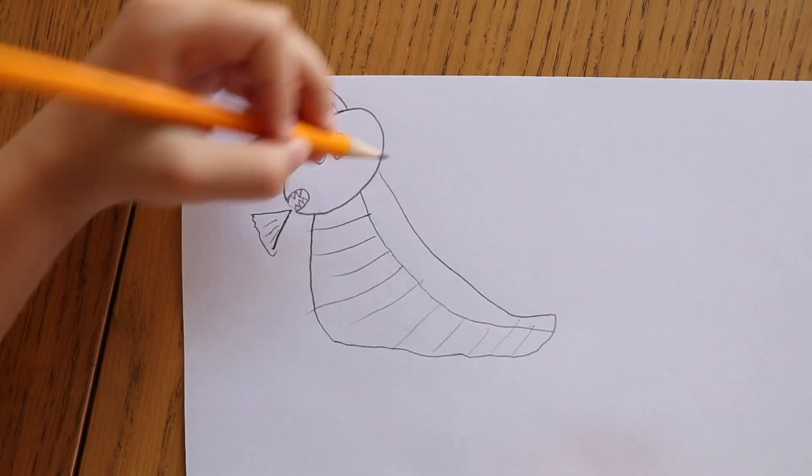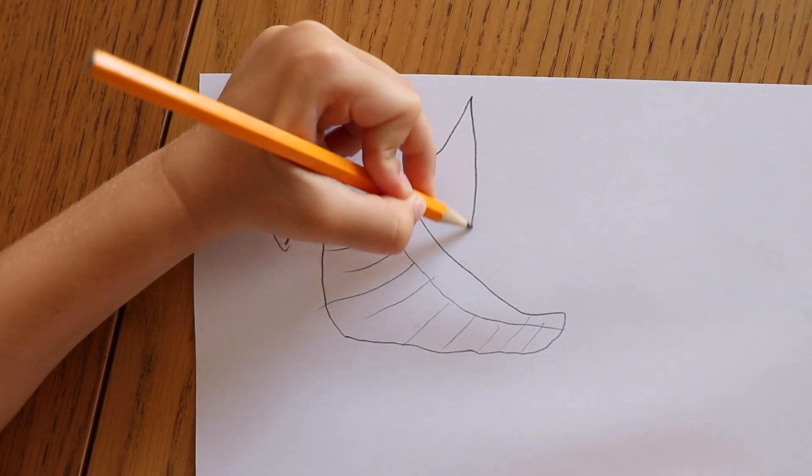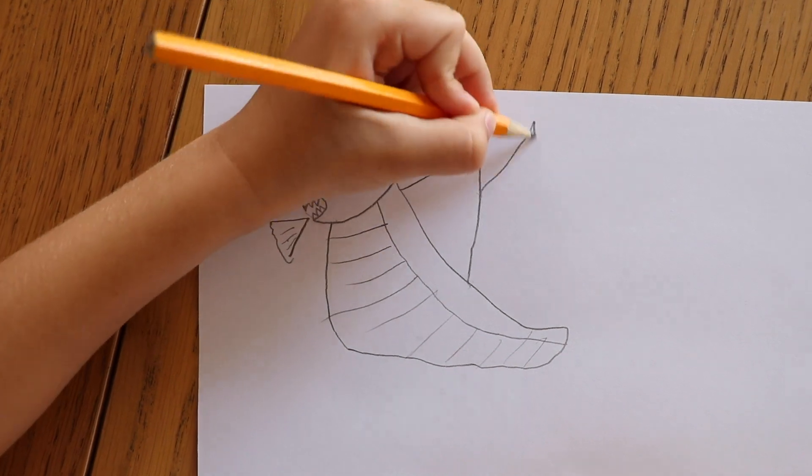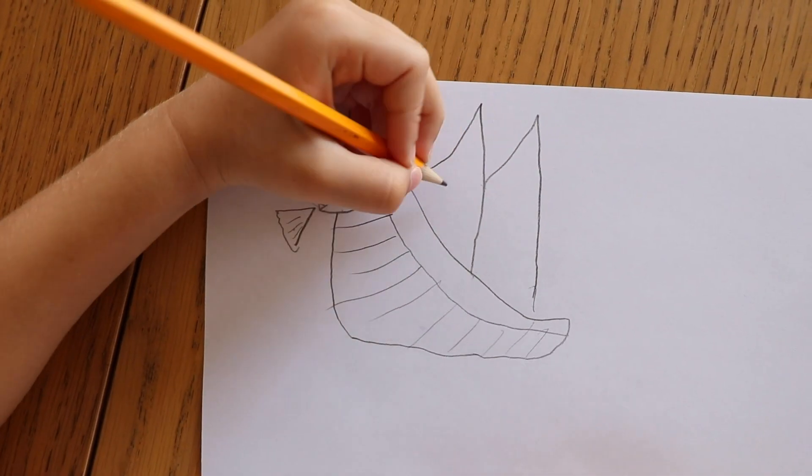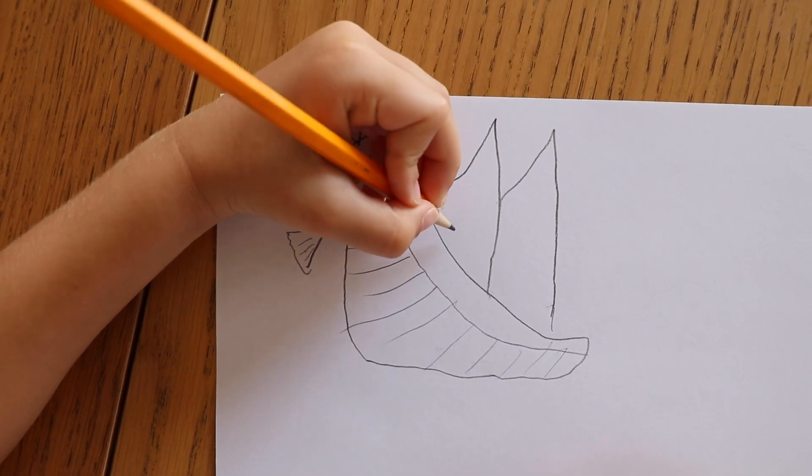And then draw wings. Like this. It looks like a letter M. And then if it was hard, you could draw a letter M.